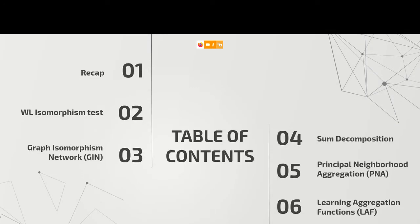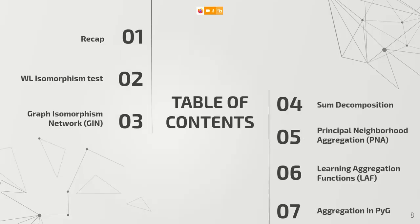Here is an overview of what we are going to cover today: the Weisfeiler-Lehmann isomorphism test and why it is useful for determining the best class of aggregation functions we can construct; graph isomorphism networks, a new class of graph neural networks implementing this idea; how they perform aggregation using decomposition strategies; other techniques such as principal neighborhood aggregation and learning aggregation functions; and finally how to implement these in PyTorch Geometric.